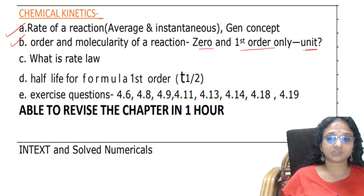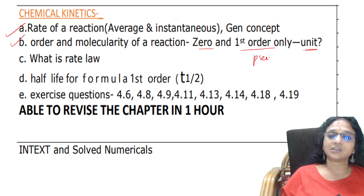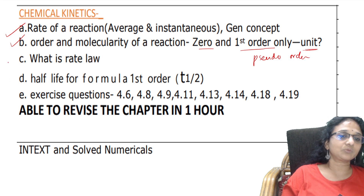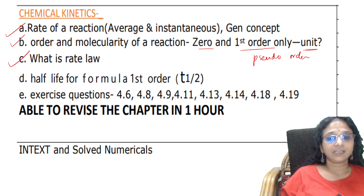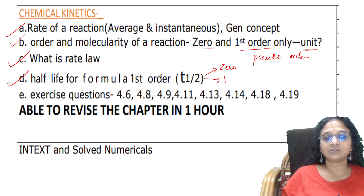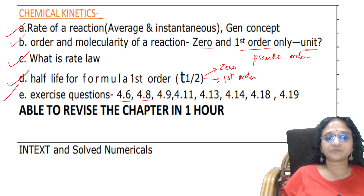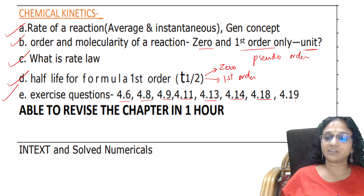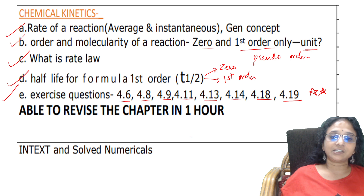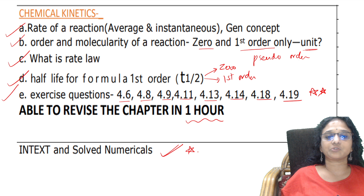Second order is not in this syllabus. First order and pseudo order are there - learn those. Learn the definition of rate law and t-half for both zero order and first order. Important exercise questions are 4.6, 4.8, 4.9, 4.11, 4.13, 4.14, 4.18 - very very important. See that you are able to revise the whole chapter in one hour. In-text and solve numericals are always important.